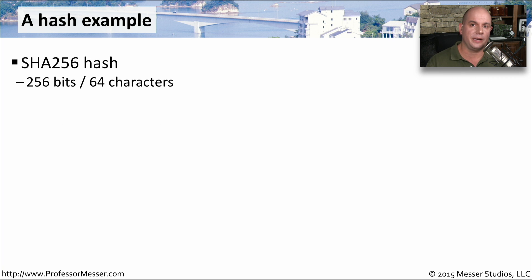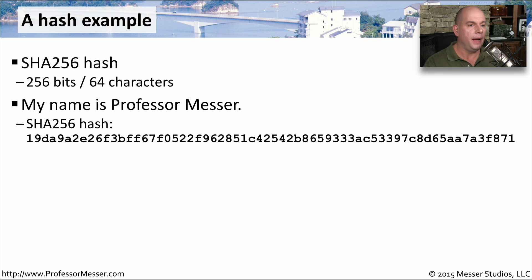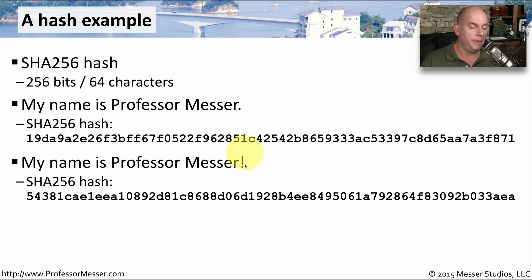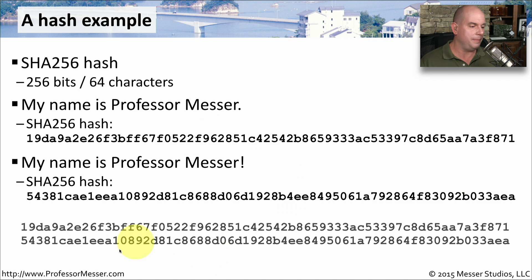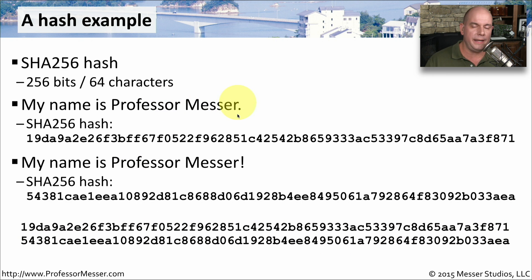One very significant characteristic of a hash is that it's always exactly the same size. If I take the text 'My name is Professor Messer.' the SHA-256 hash is listed here — you can see those 64 characters in the hash. If I take this same information and simply change the period to an exclamation mark and perform the same hashing algorithm again, I get a very different SHA-256 hash. Let's put them side by side, and you can see just how different these two hashes are. All I did was change one character, yet you can't discern that either of these is even close to being the same information.